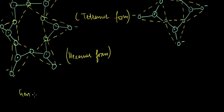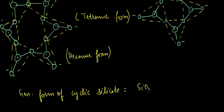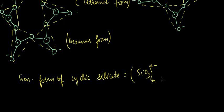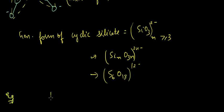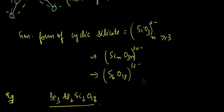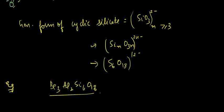The general formula for the hexamer form of cyclic silicate is Si6O18 12-. A concrete example is BE3Al2Si6O18, which is beryl. With this we come to the end of this lecture. In the next lecture we will continue seeing more types of silicates — so till then, good luck and goodbye.